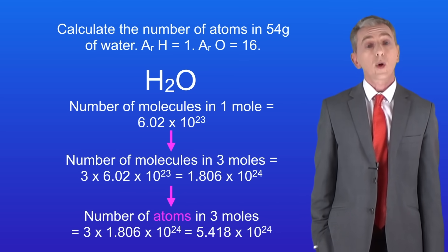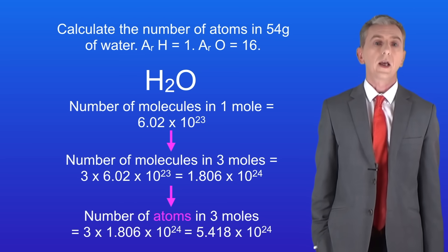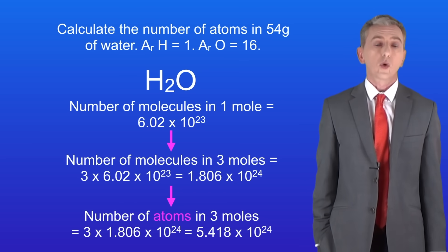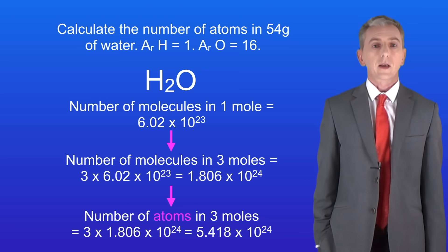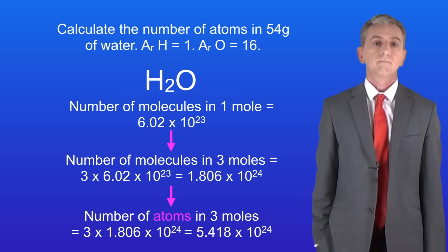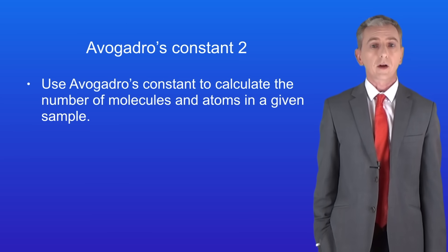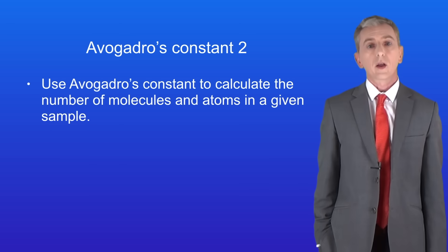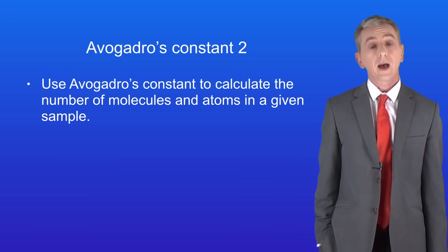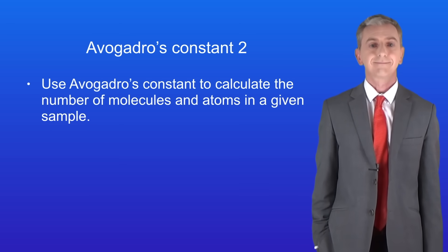You'll find plenty of questions on using Avogadro's constant in the MyoVision workbook, which you can get by clicking on the link above. Hopefully now you should be able to use Avogadro's constant to calculate the number of molecules and atoms in a given sample.